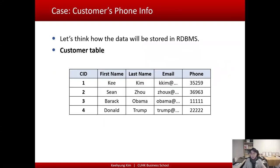Let's think about how data is stored in a relational database. Assume we have a customer table with customer information stored in it — each row represents a different customer. We have customer ID, name, email address, and phone number. That was our first design, and it works fine initially.